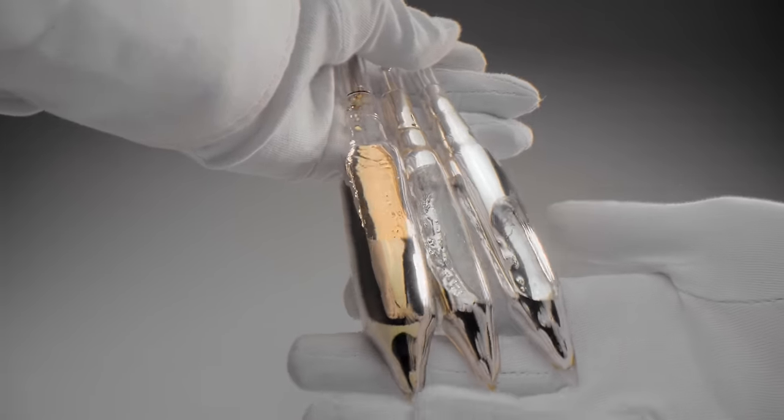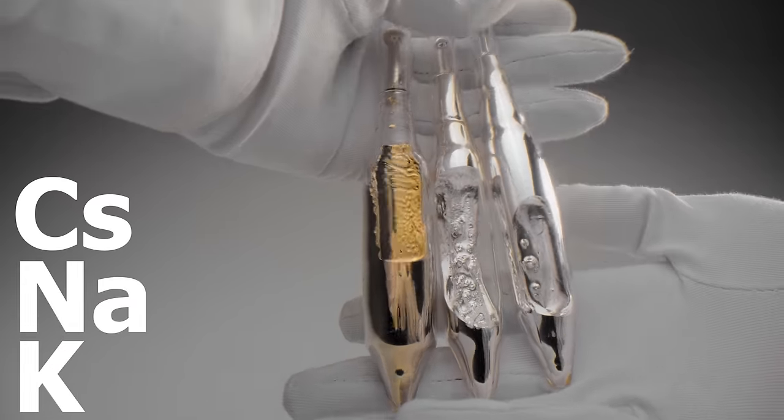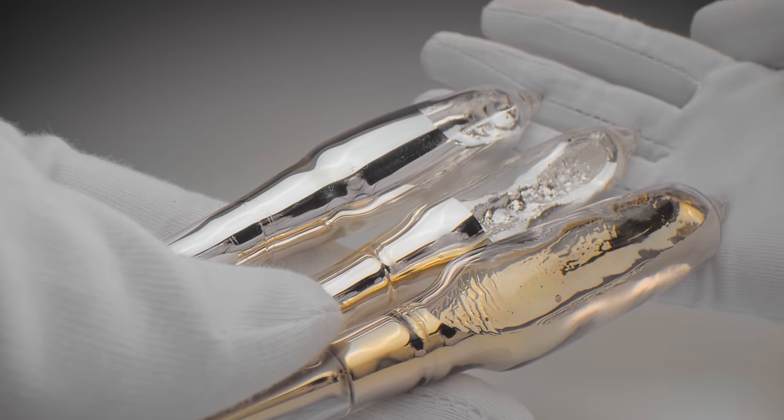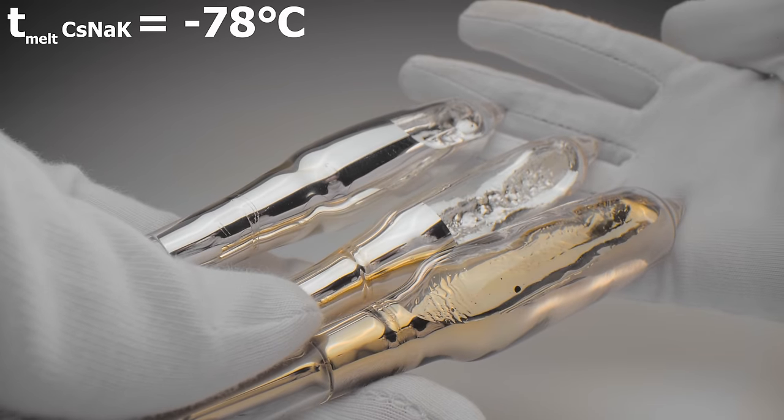An alloy consisting of three alkali metals—cesium, sodium and potassium—has a record-low melting point among all metals and their alloys, at about minus 78 degrees Celsius.